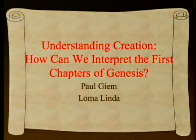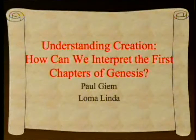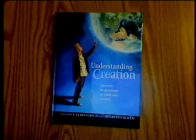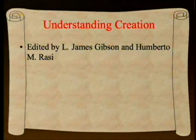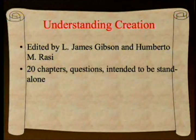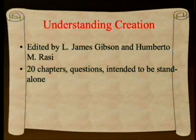The book we're looking at is Understanding Creation, and we're discussing the question: how can we interpret the first chapters of Genesis? The book is written—or edited—by James Gibson and Umberto Rossi. There are 20 chapters designed as questions, supposed to stand alone, although every once in a while you'll see references to other questions.